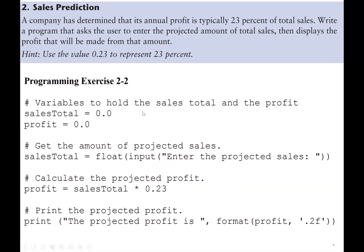So we have a variable to hold sales total and also the profit. In Python, we don't need to declare the data type of the variable. So here we have a variable salesTotal, initialize it to zero, the profit also we initialize it to zero.